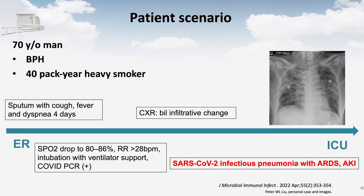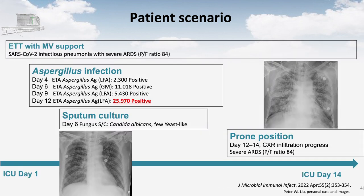The second case: a 70-year-old man with only BPH. He had typical symptoms of COVID infection — high fever, dyspnea, sputum — and was brought to our ER, intubated, and admitted to the ICU. Very early in the ICU, all Aspergillus studies were positive. We gave voriconazole and performed prone positioning for ARDS.